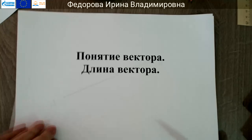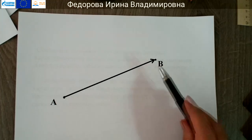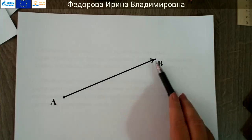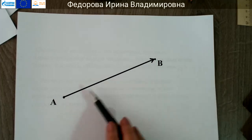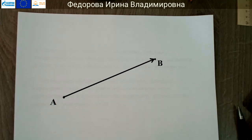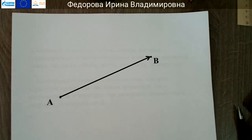Давайте рассмотрим на примере перемещения. Если тело переместилось из точки А в точку В, то это перемещение естественно изобразить направленным отрезком: соединить точки А и В и показать стрелкой, что тело переместилось из начальной точки А в конечную точку В. Такие направленные отрезки называются векторы. Векторы широко применяются как в самой математике, так и в других науках — прежде всего в физике.